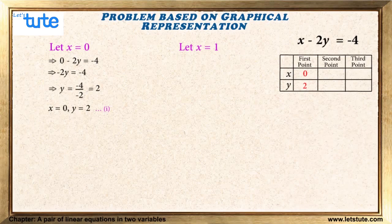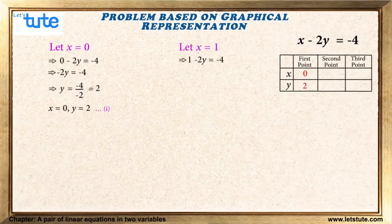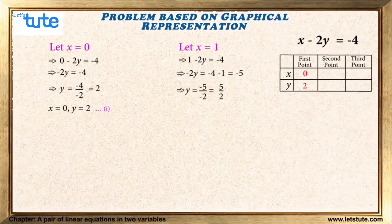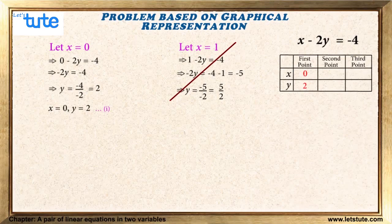For the second point, let x equal 1 and substitute: 1 minus 2y equals minus 4, so minus 2y equals minus 5, giving y equals minus 5 upon 2. The value of y is a fraction, which will be difficult to plot on graph paper, so we will not consider this point and instead choose another value for x.